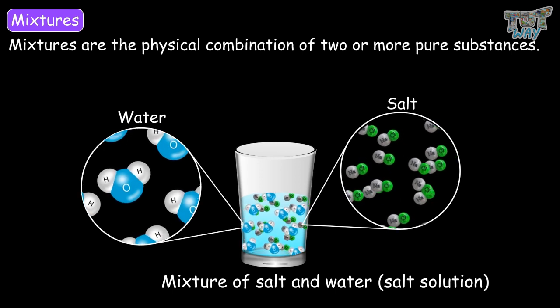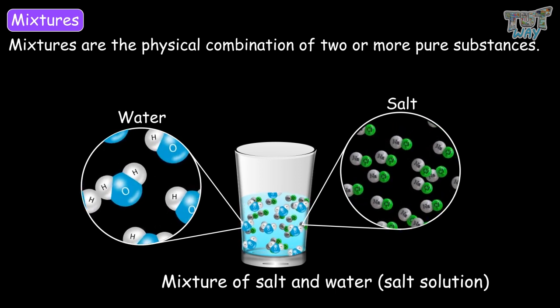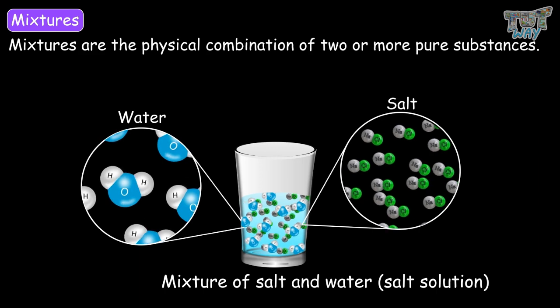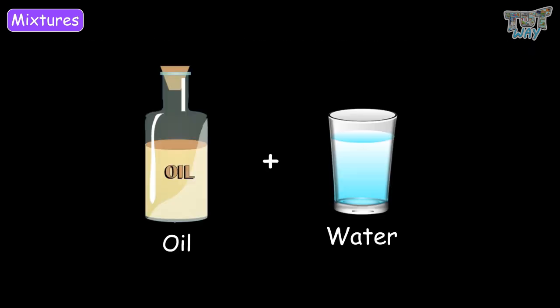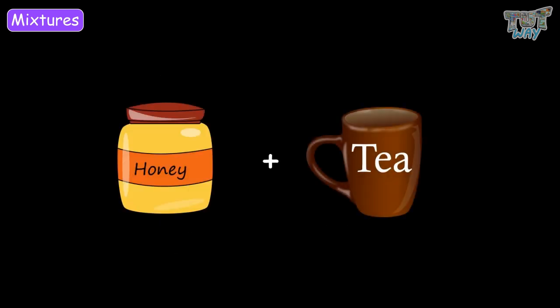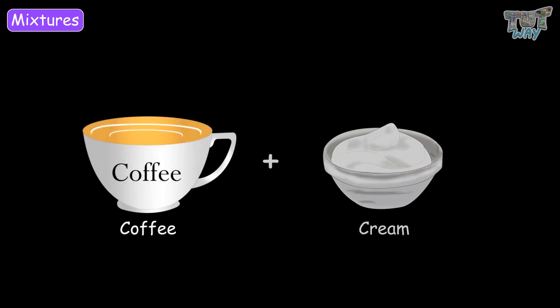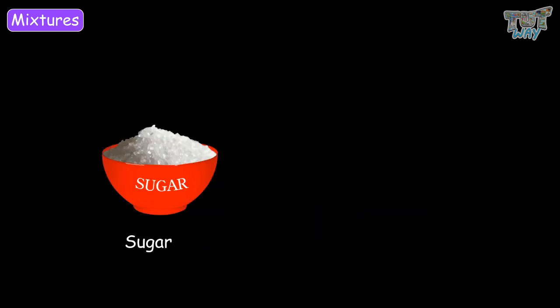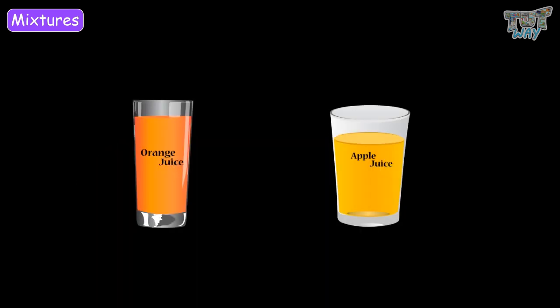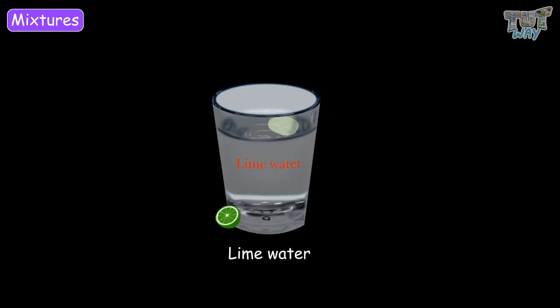Here we have examples of mixtures that have two or more pure substances. Common food mixtures are: oil and water, honey and tea, milk and chocolate, coffee and cream, oatmeal and raisin, cereals and milk, chocolate and water, cake ingredients, sugar and water, sand and water, orange juice and apple juice, and lime water. So these are examples of mixtures.